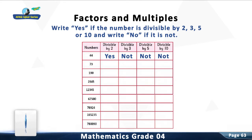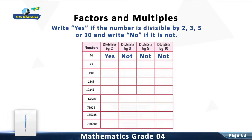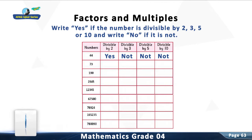You are right. 44 is divisible by 2. It is not divisible by 3. It is not divisible by 5. It is not divisible by 10.